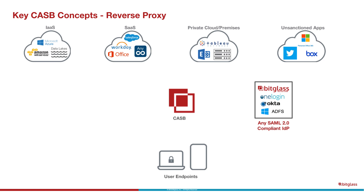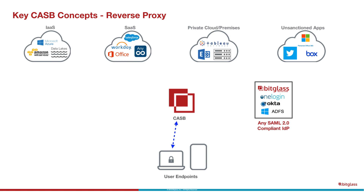The third method is the reverse proxy. This works a little differently. The user connects to the SaaS application — or it can be IaaS or a private cloud premises app — and then the application itself redirects the user to the CASB, typically for authentication, like a single sign-on process. So the user endpoint is redirected, without the user having to do anything, by the application to the CASB, which will then broker the authentication.